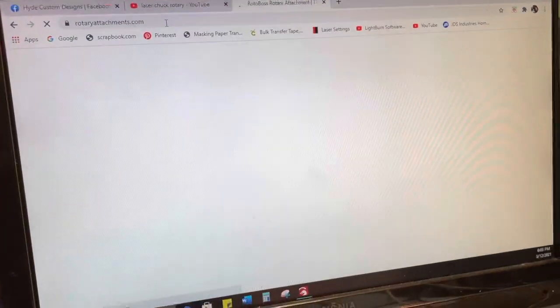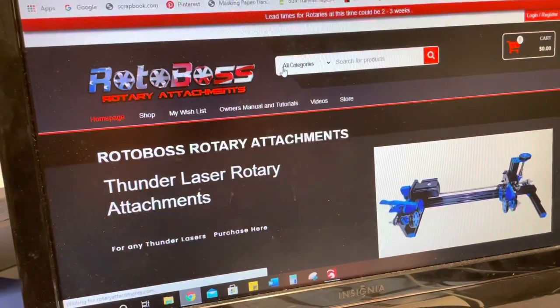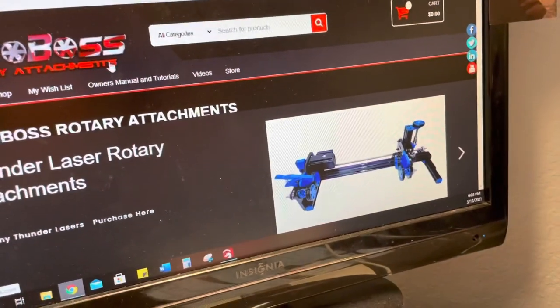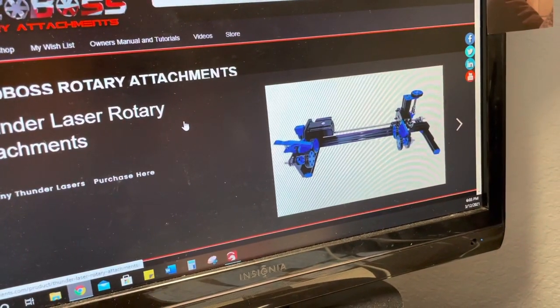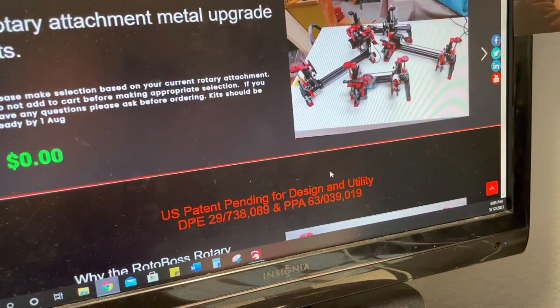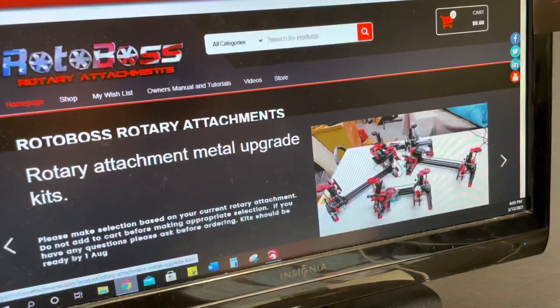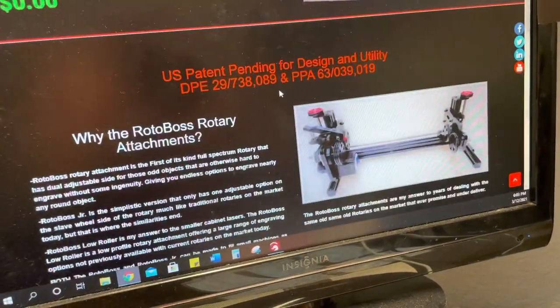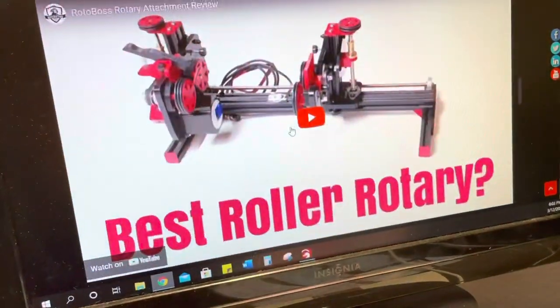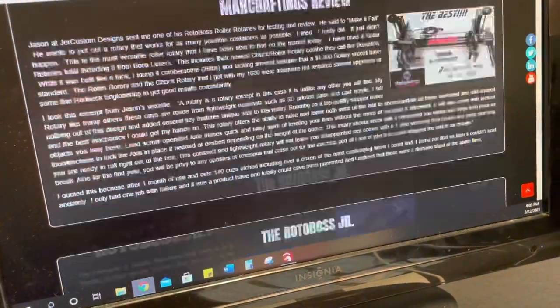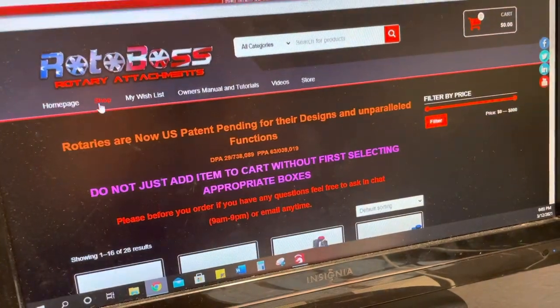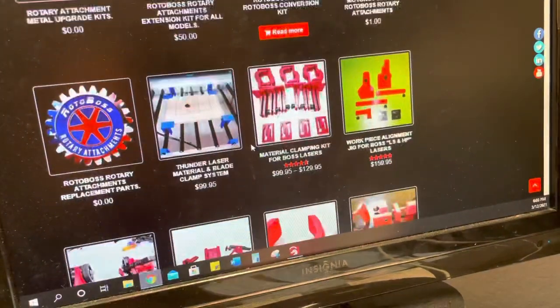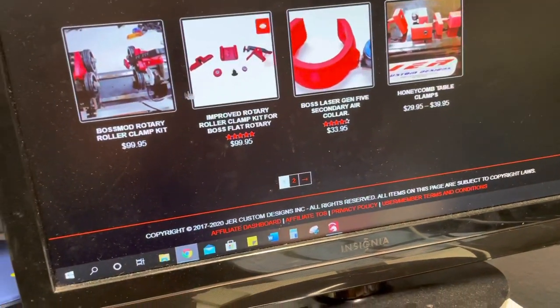So you pull that up. This is what the website looks like. These are the guys that sell the roto bosses. From what I understand, if you have the money, get one of these versus using the boss one, because it's much better built, less walking, just overall a much better part from what I understand. As you can see, this is the website here. Go to shop.